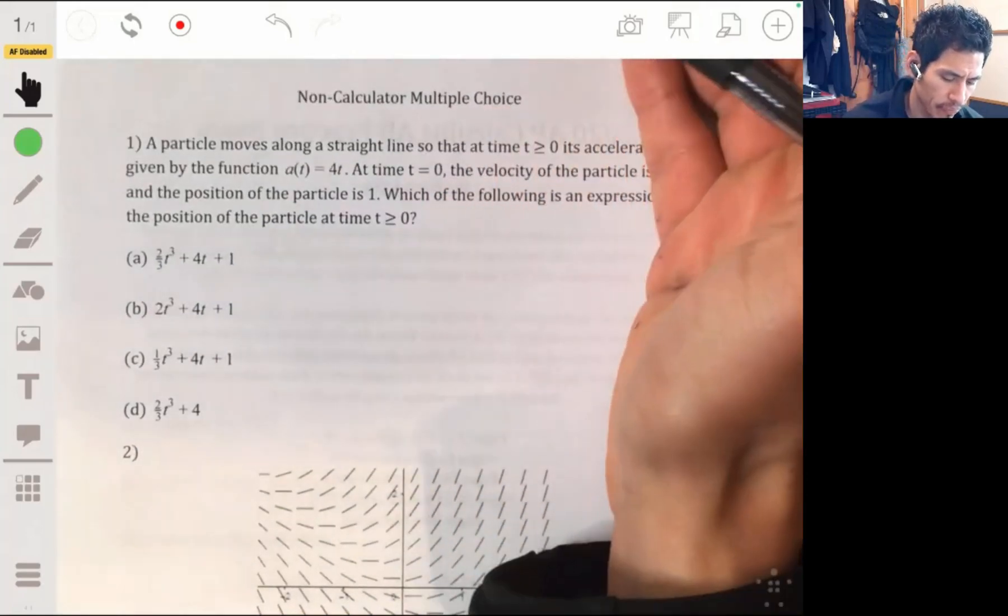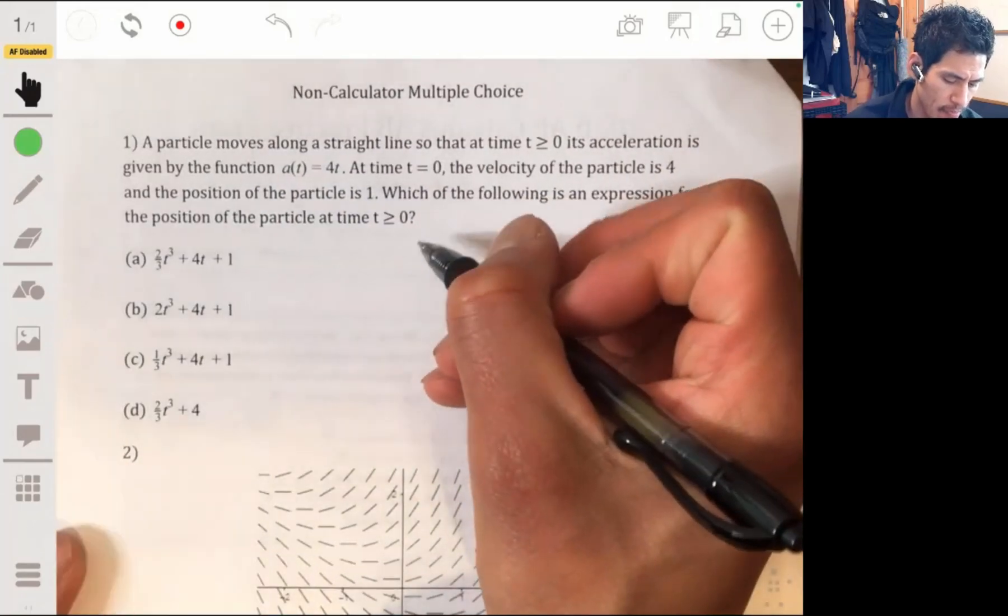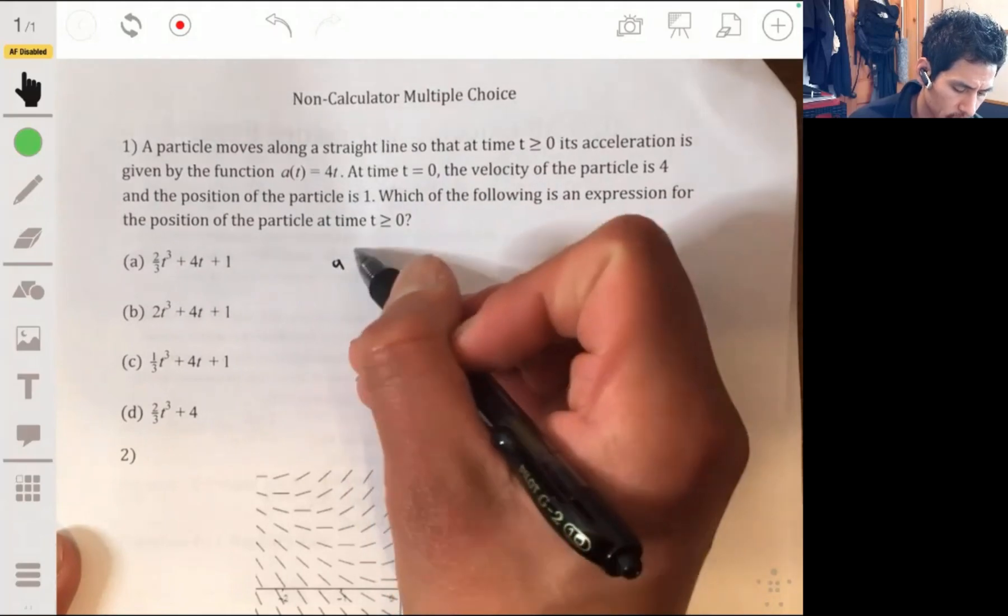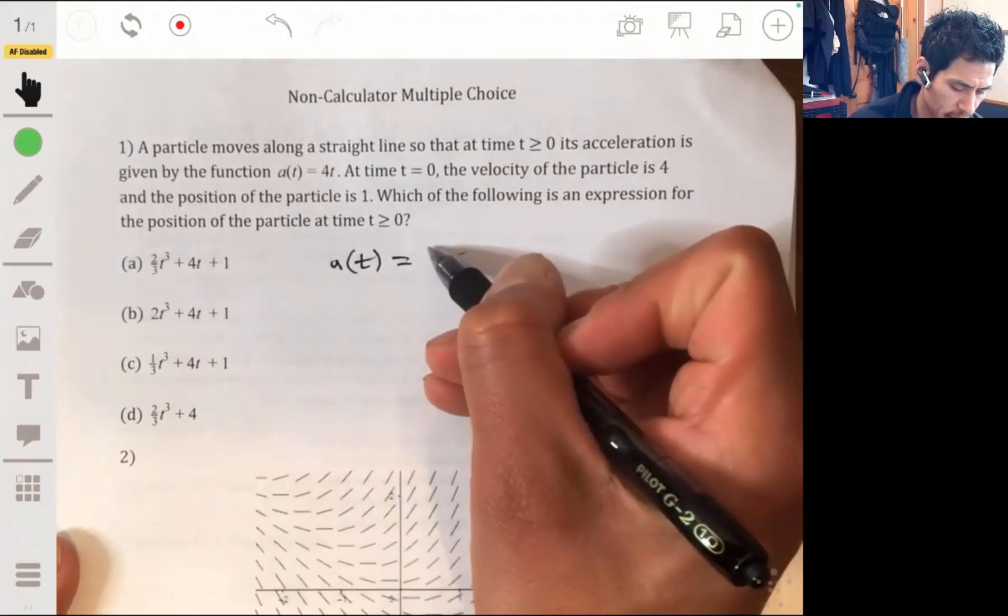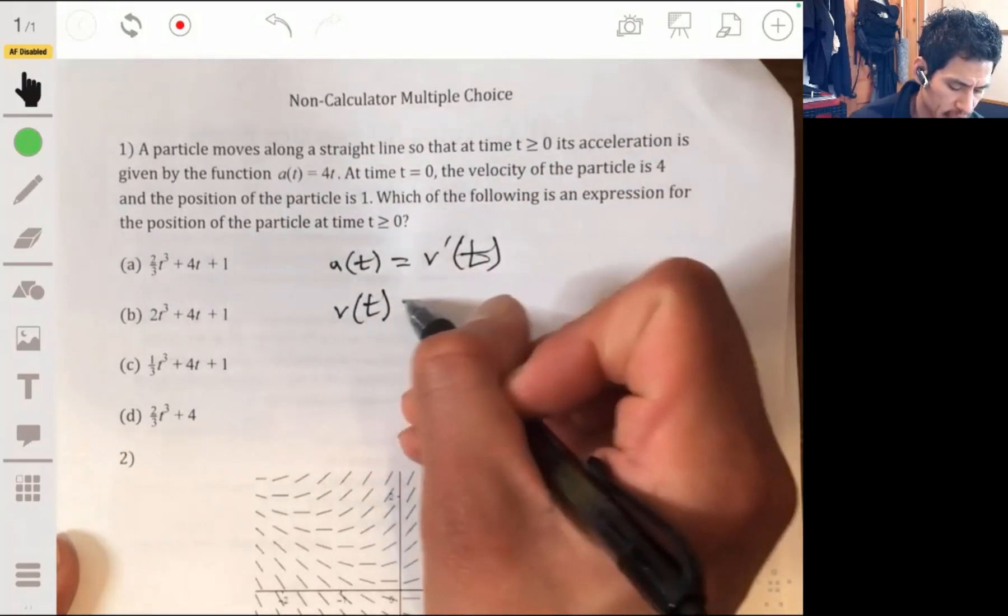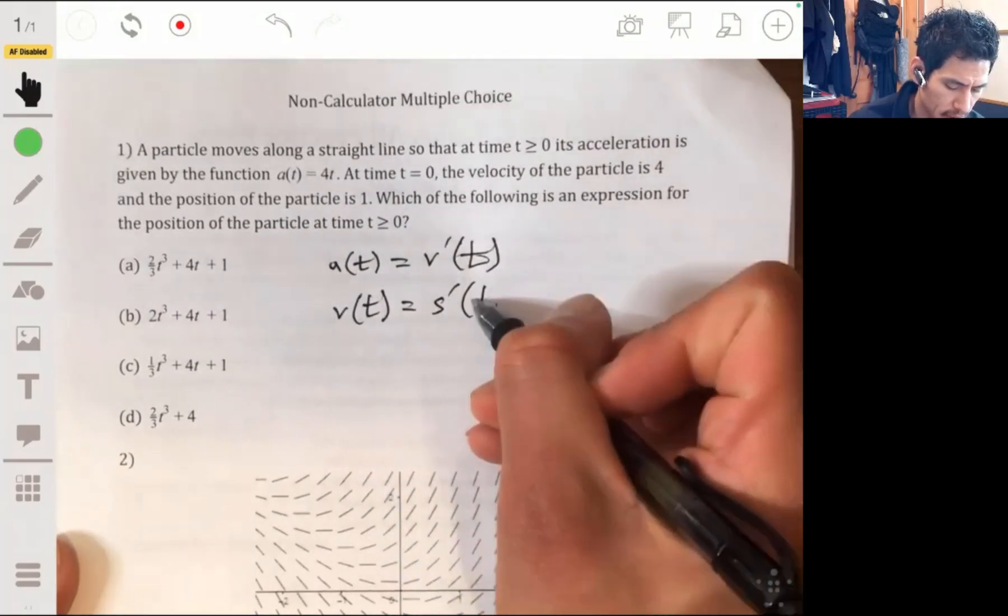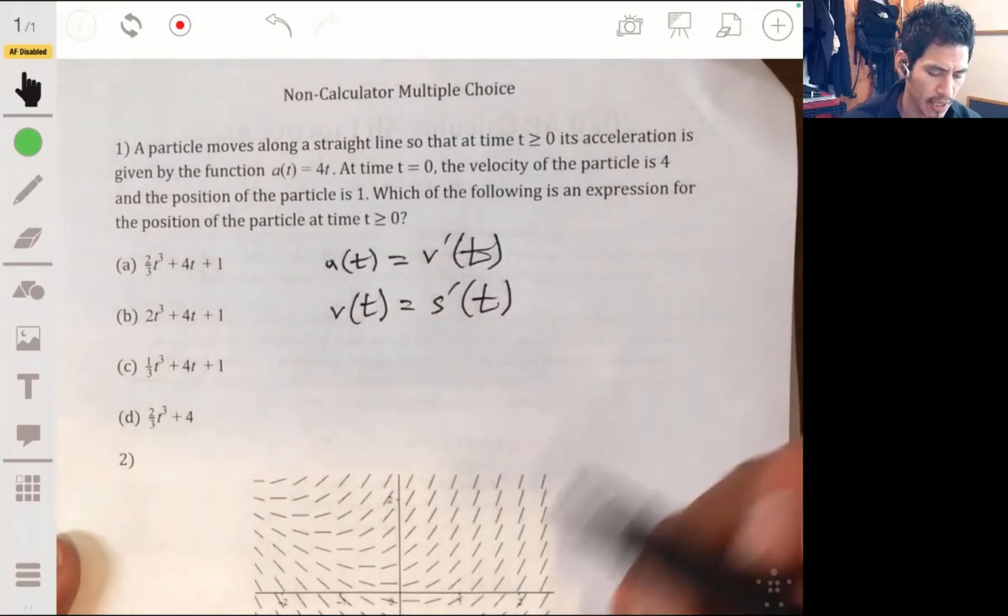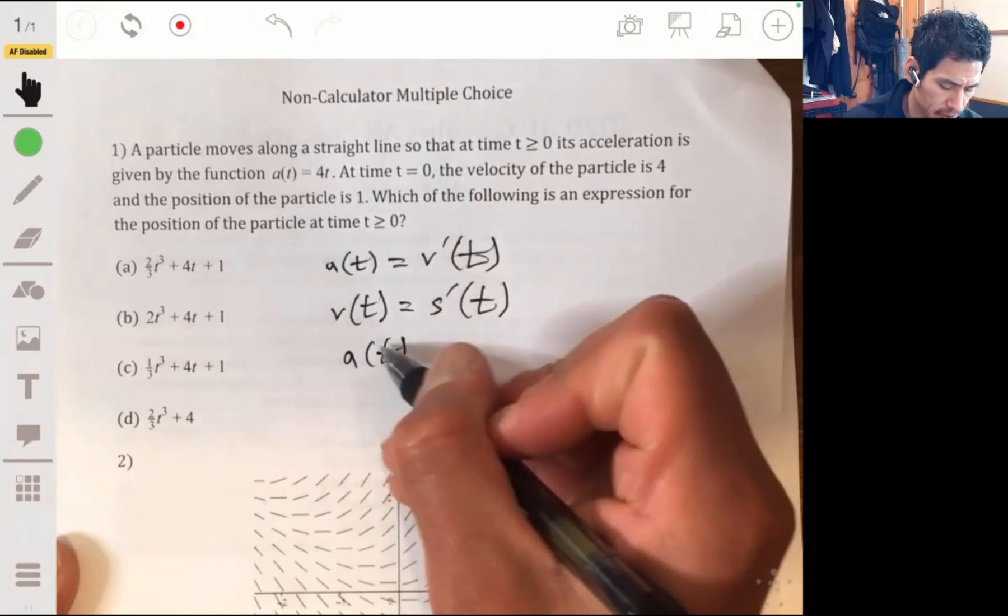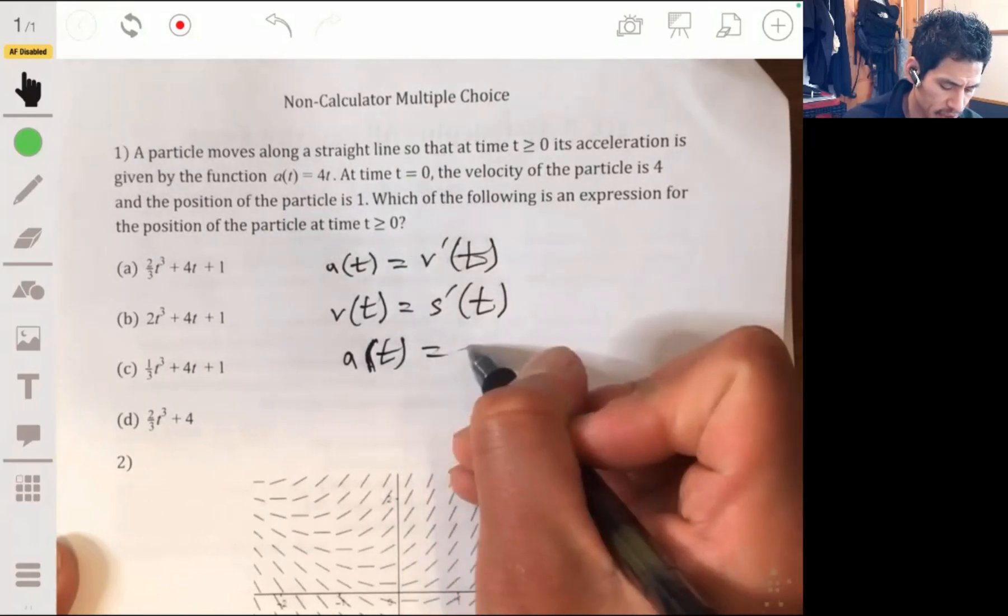If you just remember and recognize that acceleration is the derivative of velocity and velocity is the derivative of position, and so that means that acceleration is also the second derivative of position.